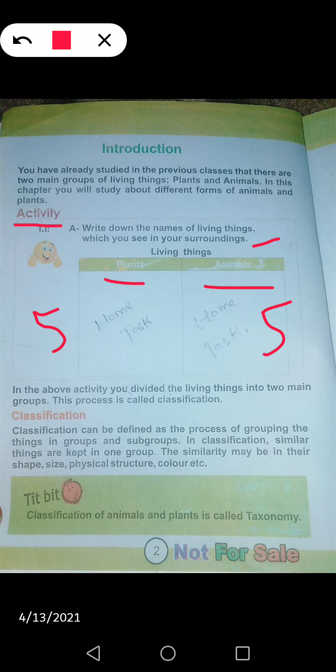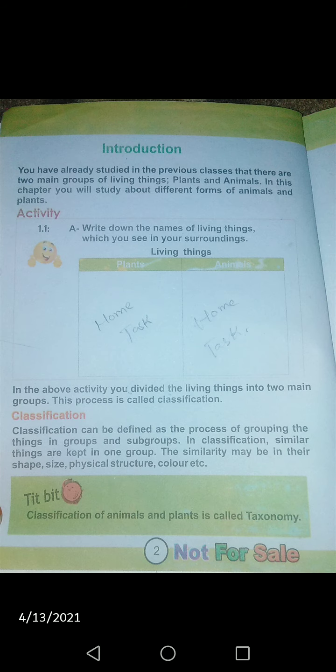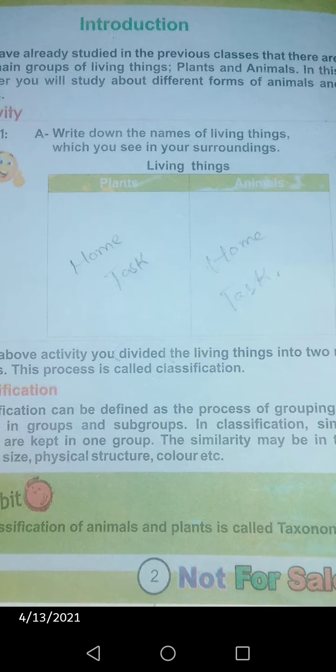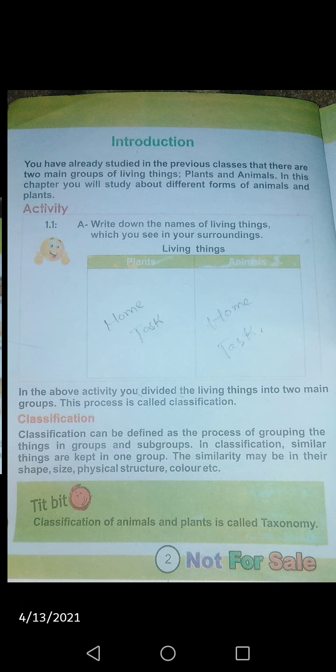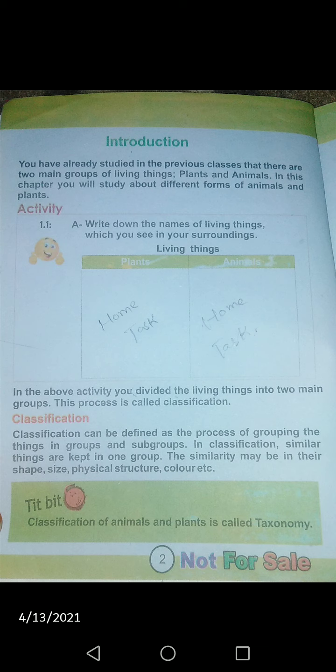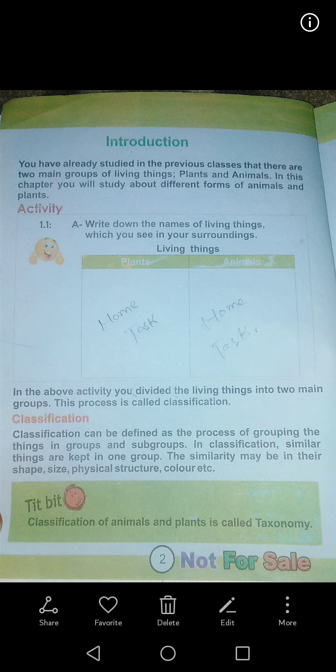Every student must write five plants and five animals. Now, coming back to classification — as I told you, classification is a process where we group any thing into groups and subgroups. In classification, we don't mix different things — when scientists and biologists classified living things, they placed similar things together. If it is an animal, they made a group only of animals — they didn't bring a plant or a bacteria into the animal group.